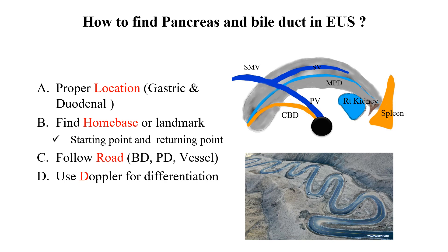A: Proper location for target organs — gastric and duodenal area. B: Find a home base or landmark. This home base is the starting point and returning point for echo endoscope movement. C: Follow the road — like bile duct, pancreas duct, and vessels. D: We can use color flow for differentiation between bile duct and vessels.